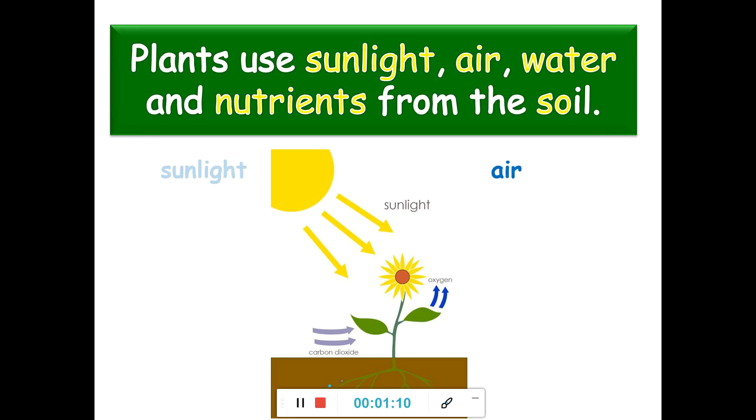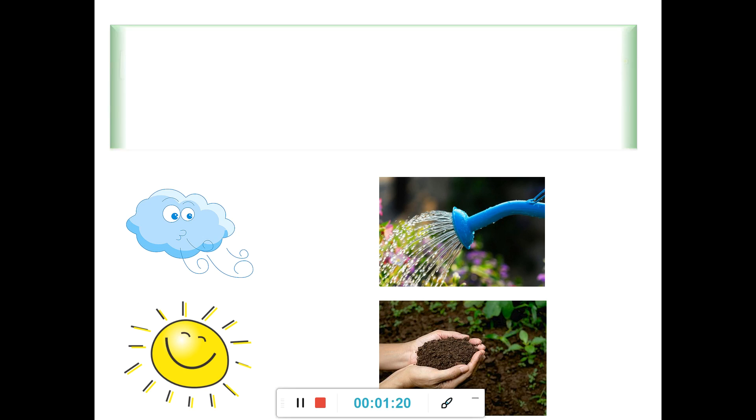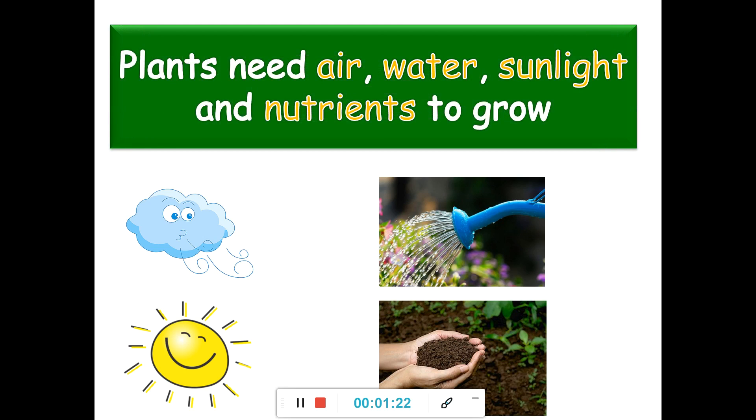Air, sunlight, water, nutrients. Plants need air, water, sunlight and nutrients to grow. Air, sunlight, water, nutrients.